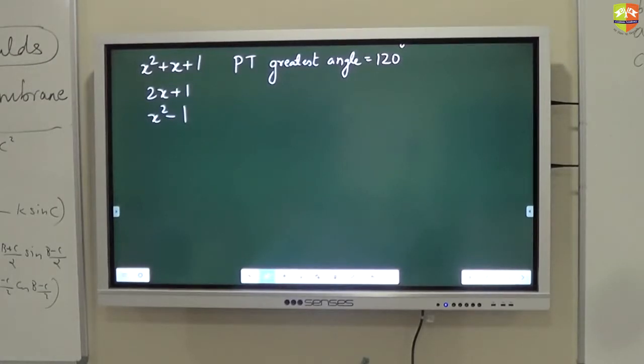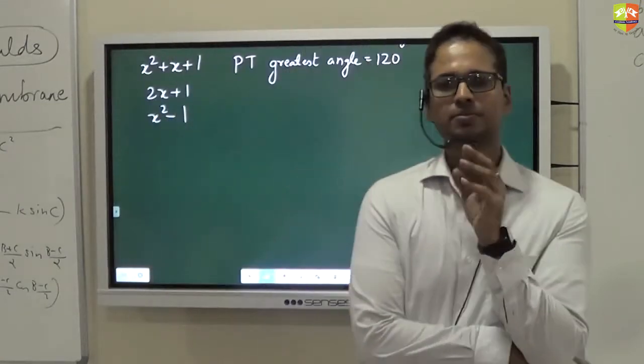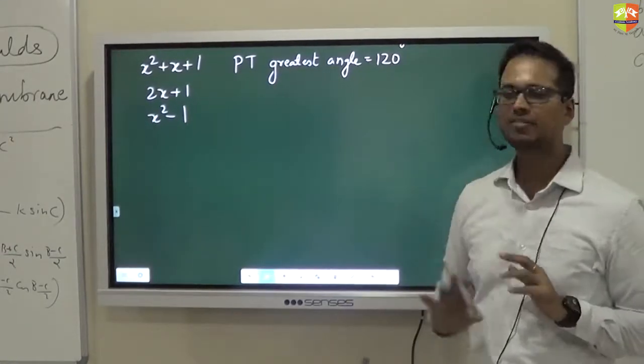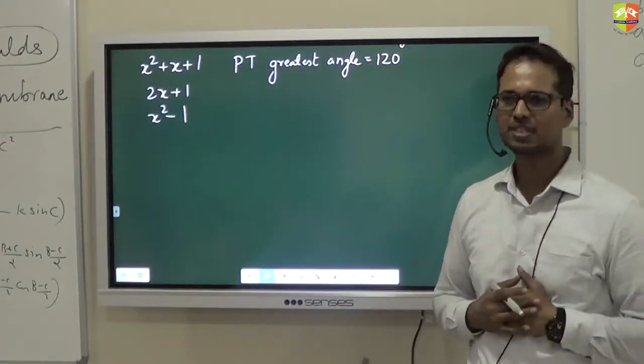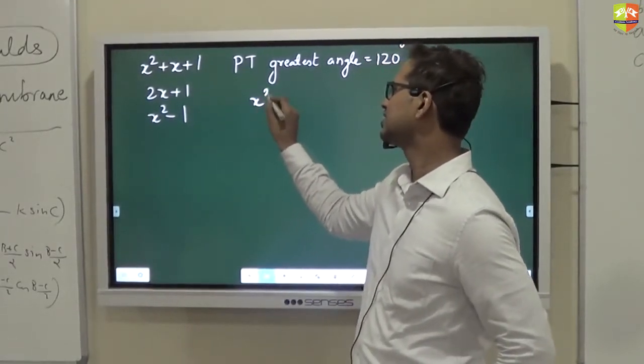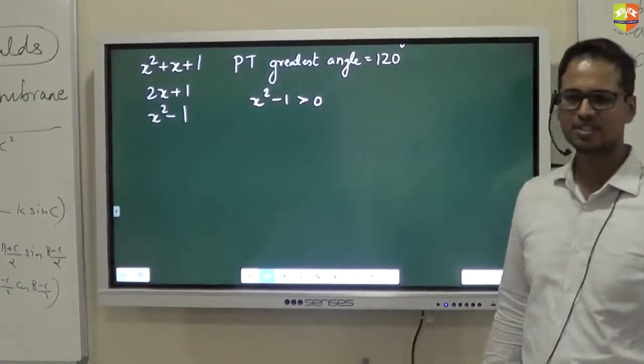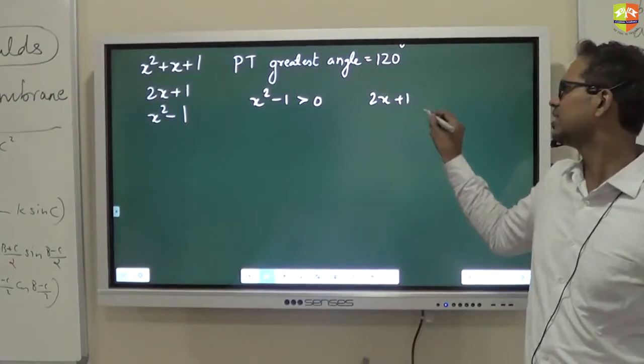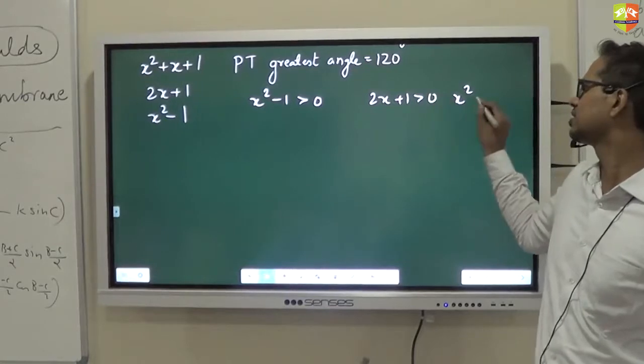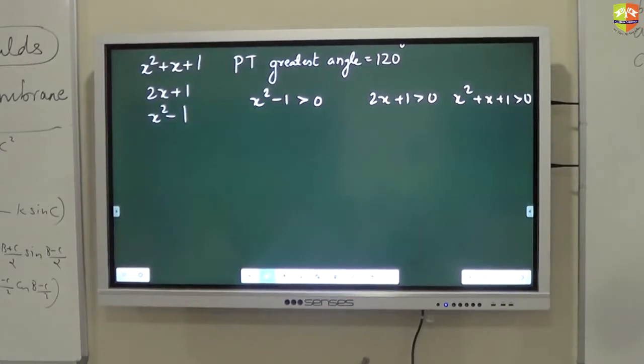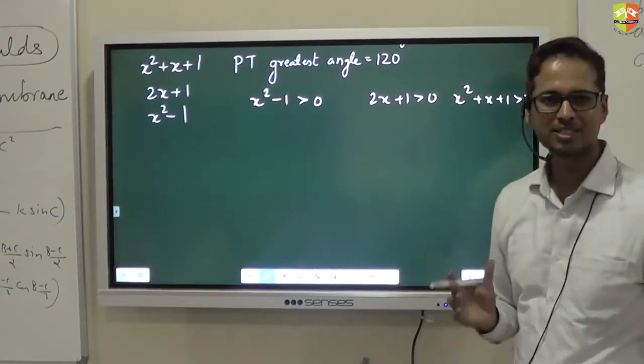If you're dealing with a triangle, obviously all of them have to be positive. This has to be positive, this has to be positive. Because in a triangle, we know that sides should be positive. Now, let me say x² - 1 is positive. This implies x could either be greater than 1 or could be less than -1.